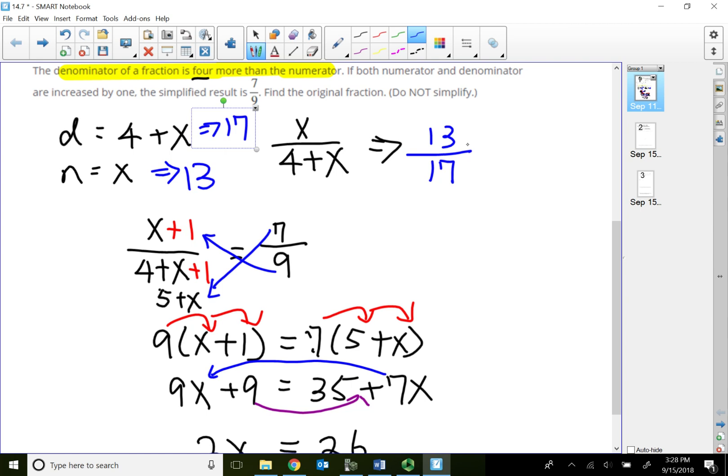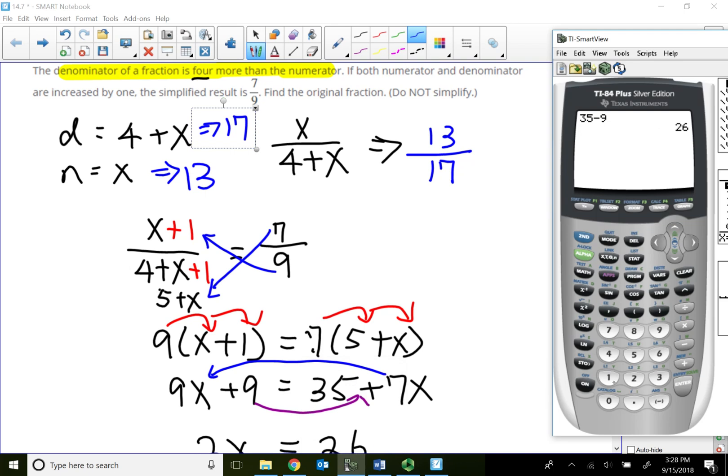If I add one to each one, like the problem want me to translate, 14 over 18. 14 over 18 simplify got to be seven over nine. So that's my answer.